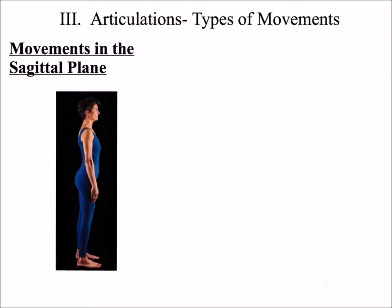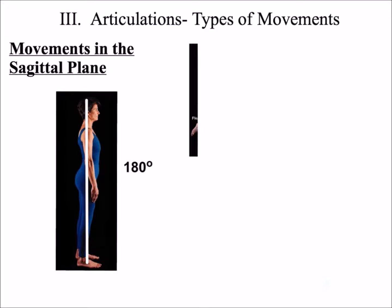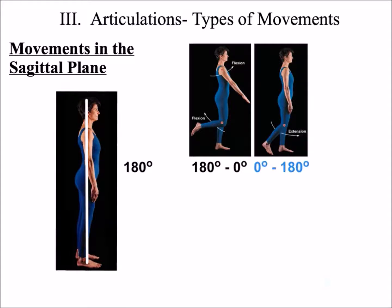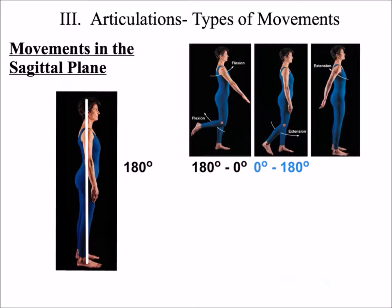The first set of movements are those parallel to the sagittal plane, described by looking at the joint angle. Movement from 180 degrees to 0 is called flexion. Movement from 0 degrees to 180 is called extension. Movement greater than 180 degrees is called hyperextension.